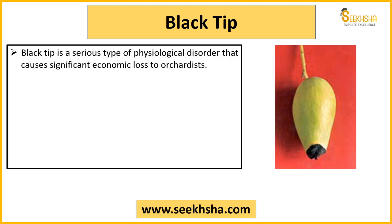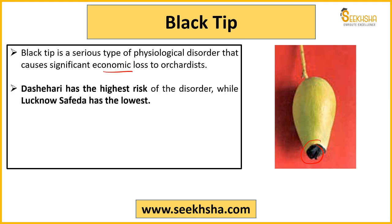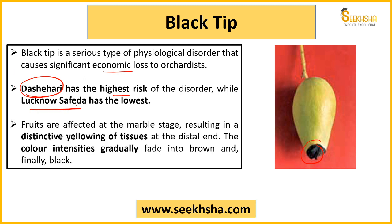Black tip — aap dekh rahe ho image mein is tarhe ka mango fruit ho jata hai agar black tip ki problem rehti hai. Yeh eek physiological disorder hai aur economic loss kaafi ho jata hai — aisa mango bikta nahi hai, aur export mein to kuchh aega hi nahi hath mein. Dasheri jo variety hai mango ki, woh sab se yaadha risk ke upar hoti hai black tip ki problem ke. Ab kaim bar woh simply isi meh se question utha lega: which among the following varieties of mango is at the highest risk of black tip? Usmein 4-5 varieties jadega Dasheri. Aur sab se lowest risk ke upar jo variety hoti hai woh hoti hai Lucknow Safeda — Lucknow Safeda mein sab se kam chances hoti hai ki aapki black tip ki problem ho.